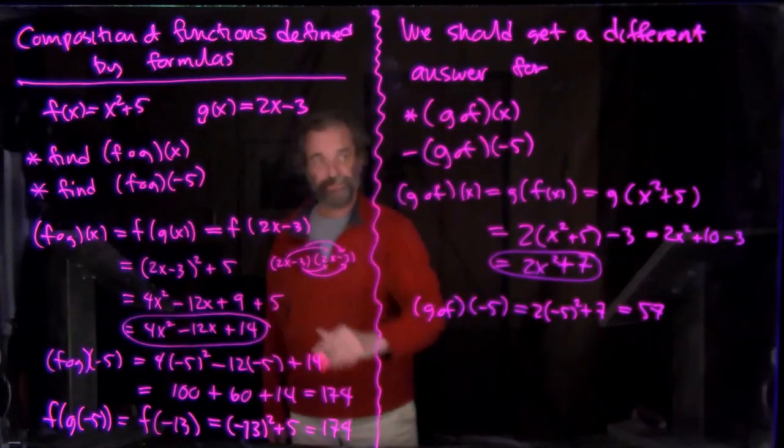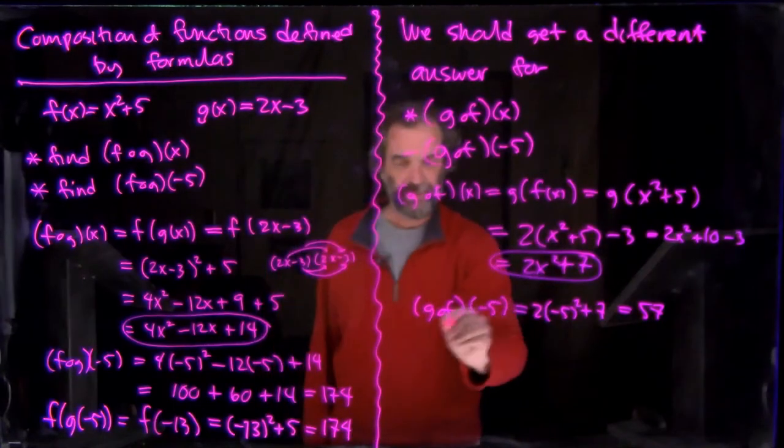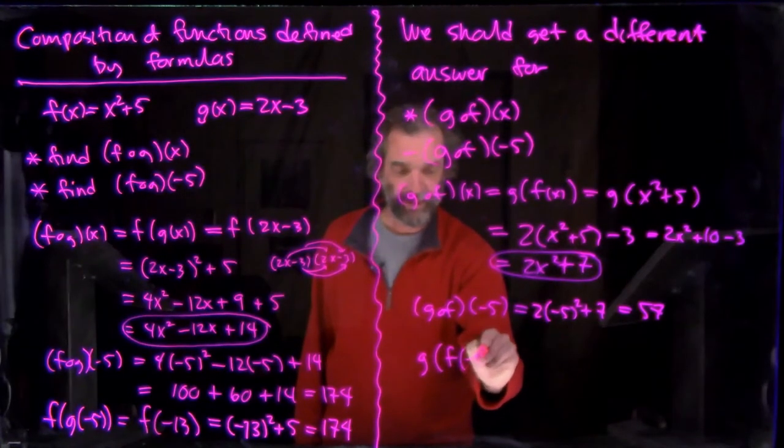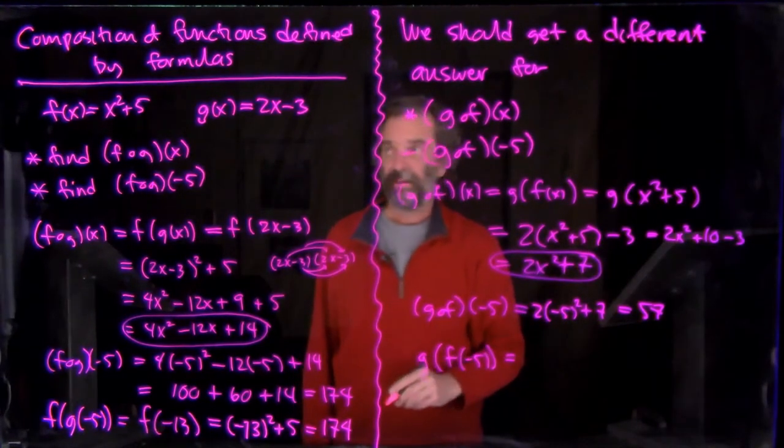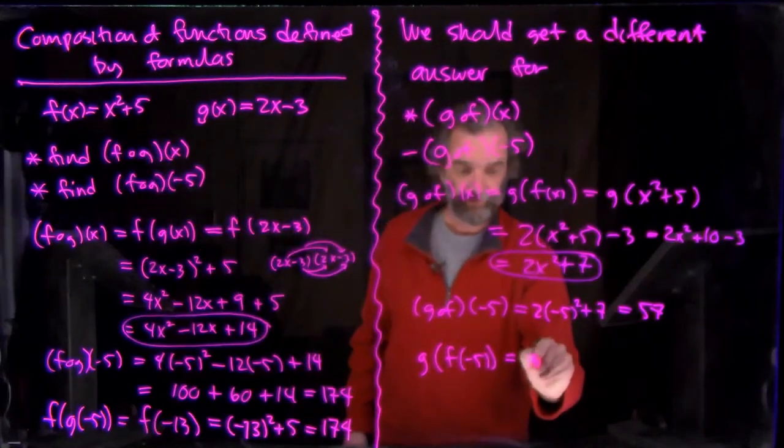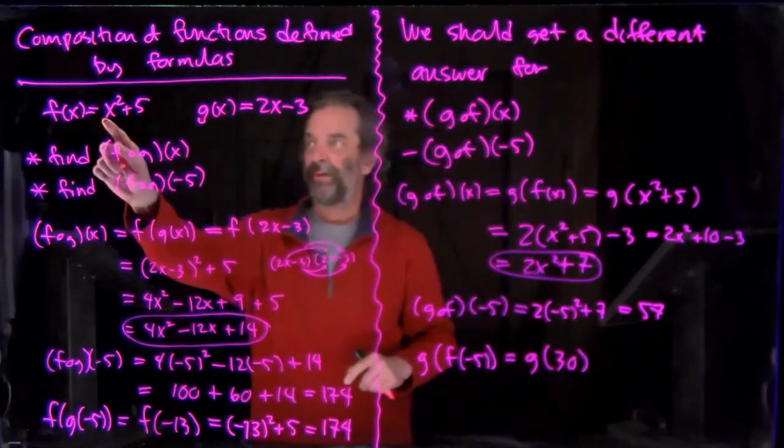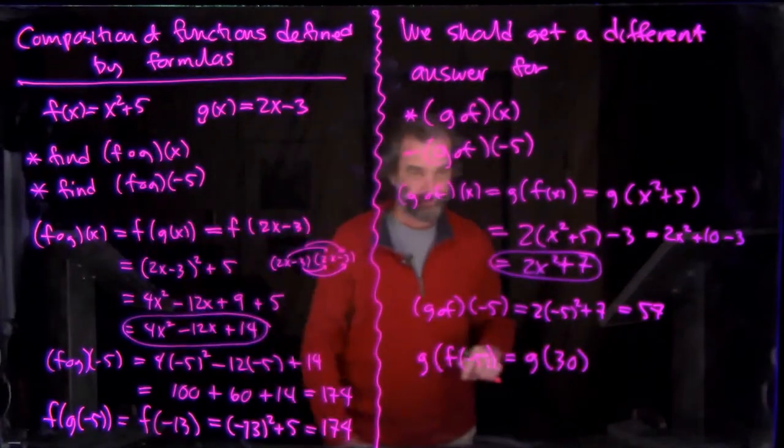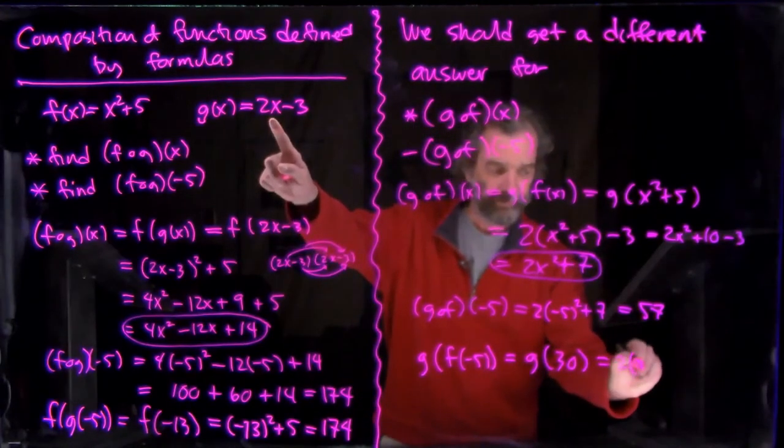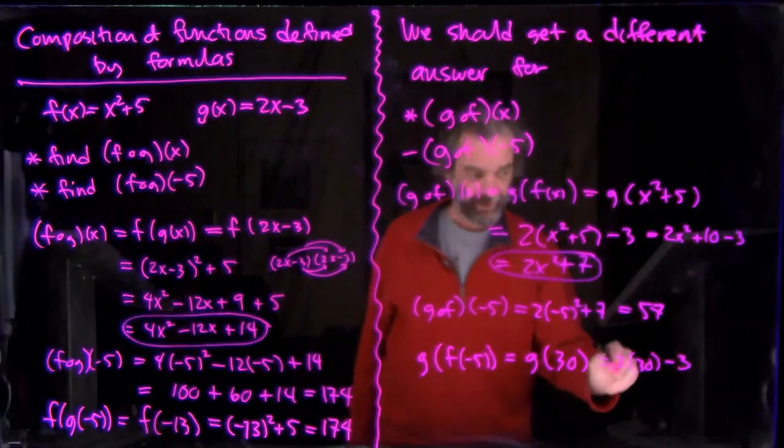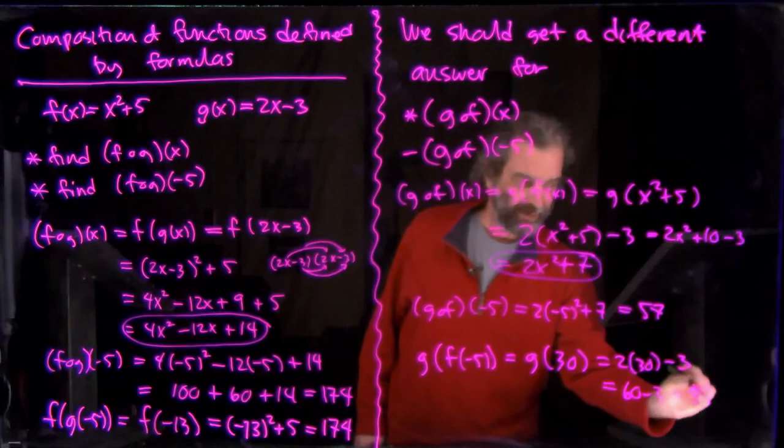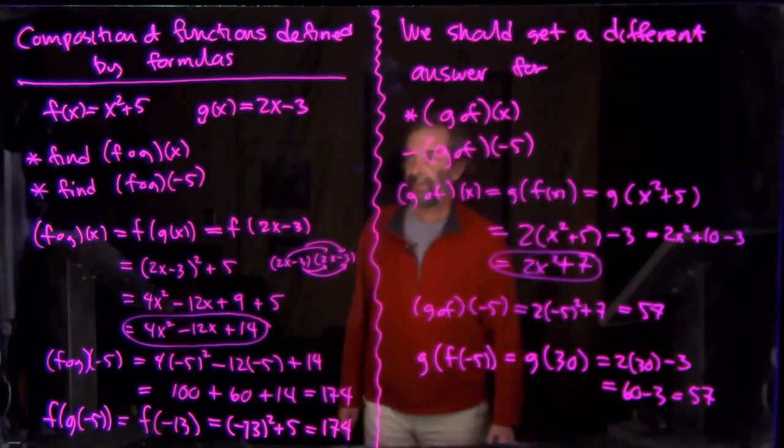And as we said over here, we didn't need the formula to get g composed with f. We could, at -5, we could write it out directly. g(f(-5)). Oh dear. Here's f. f(-5) is 30. -5 squared is 25 plus 5 is 30. And g takes 30, multiplies it by 2, and then subtracts 3. So that's 60 - 3, which we are happy to see is the 57 that we got last time.